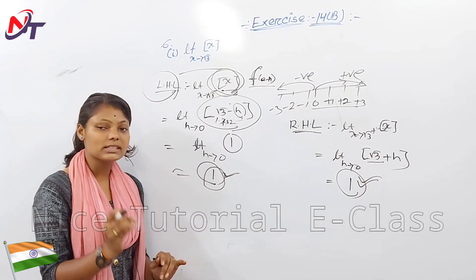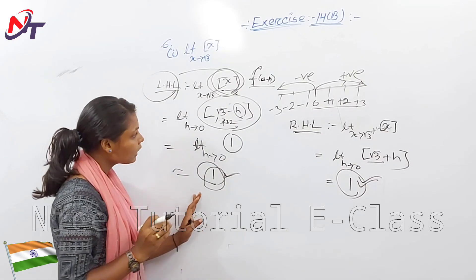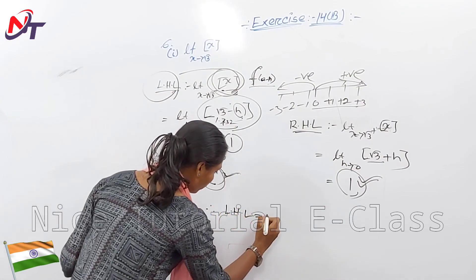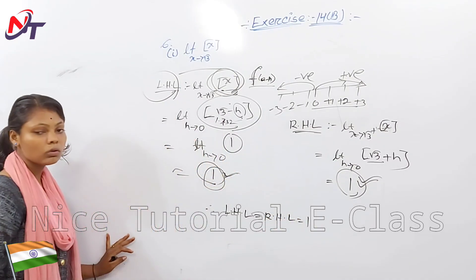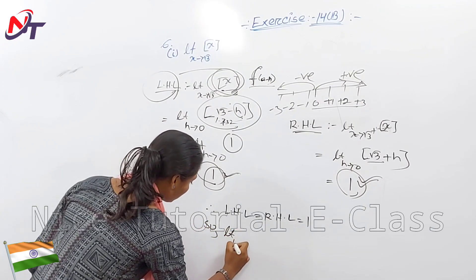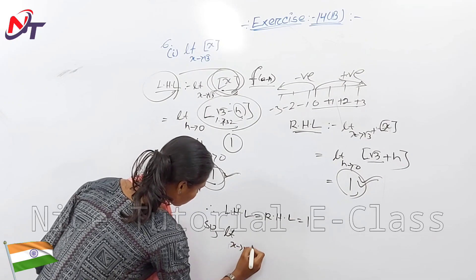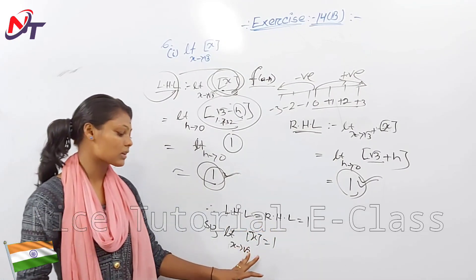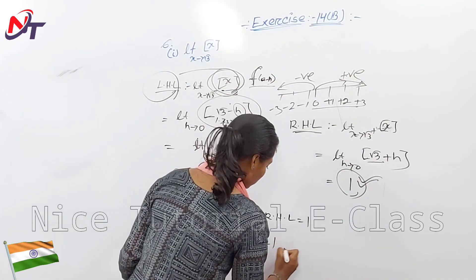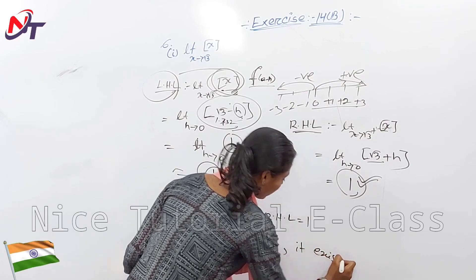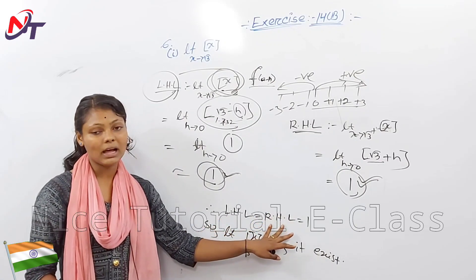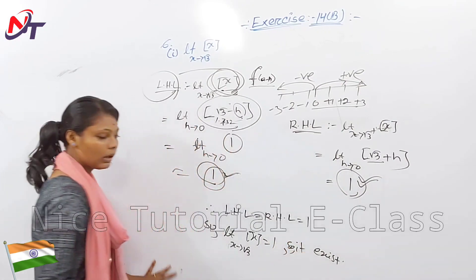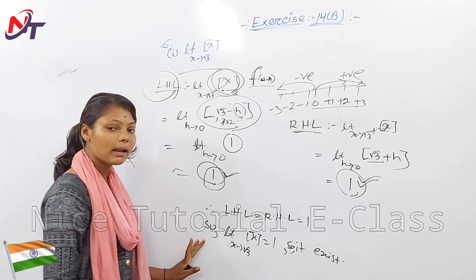So the left-hand limit is equal to the right-hand limit, equal to 1. Therefore, limit x tends to √3 of bracket x is equal to 1. LHL equals RHL equals 1, so the limit exists.